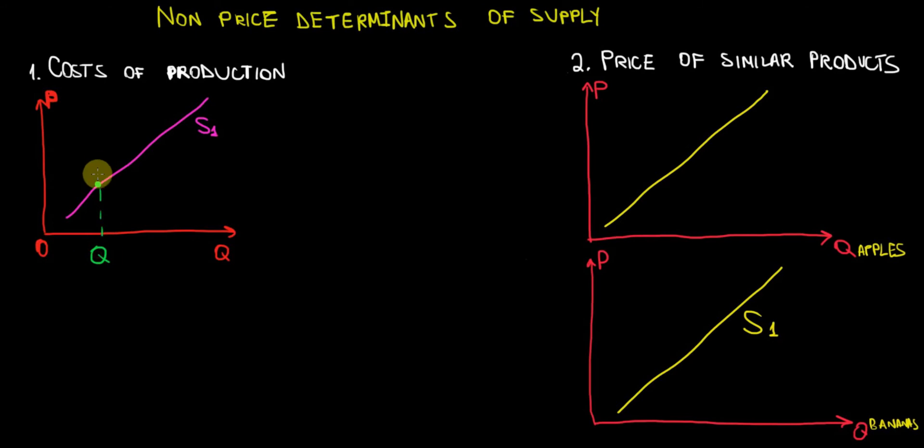So therefore, for this given level of quantity I'm highlighting right now, we would have to have a higher price on the new supply curve. Let's say this would be the new higher price. That means the new supply curve has to shift up or has to shift to the left, as we say. The supply curve shifts to the left when the cost of production becomes higher.